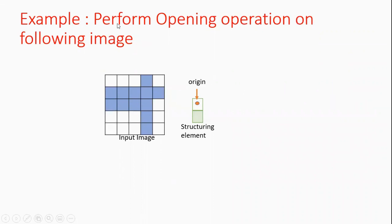Let's solve an example: perform opening operation on the following image. This input image is given and the structuring element is also specified. In this structuring element, this is the origin pixel. Let's see how to perform opening operation on this image — first we will do erosion and then dilation.